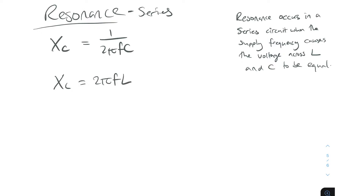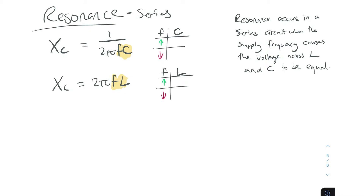What we can see here is that frequency and capacitance, and frequency and inductance, have a relationship. As the supply frequency is increased — imagine you had a 10 Hz supply and you increase it to 10 kHz — the capacitive reactance of that circuit goes down. And as you decrease supply frequency, capacitive reactance goes up. So capacitance and frequency are inversely related, and you can see that from the equation.